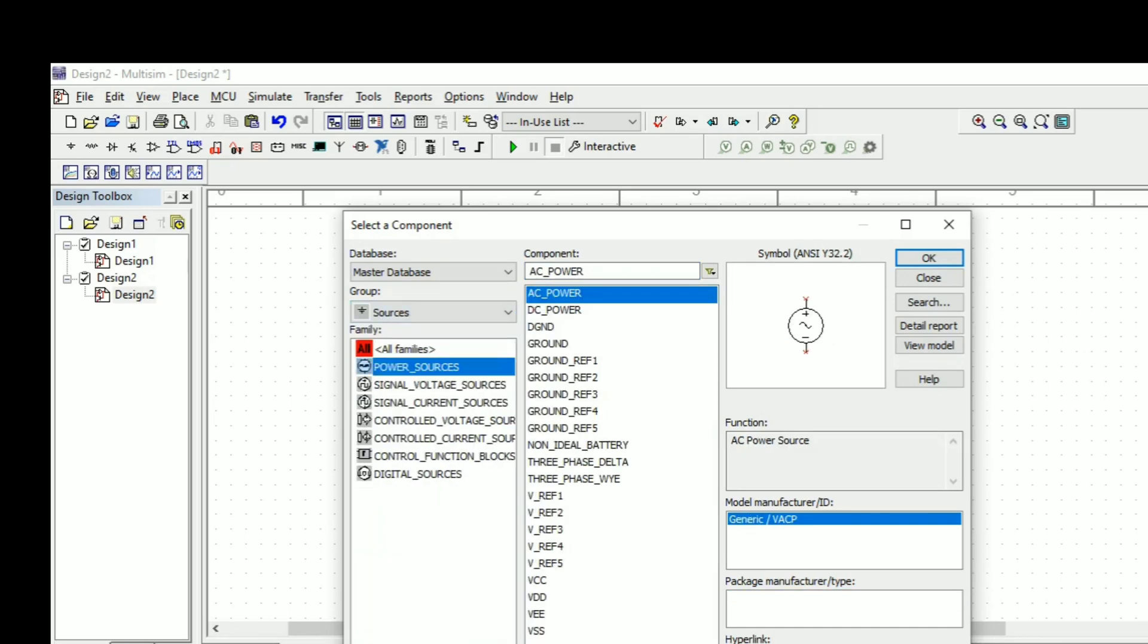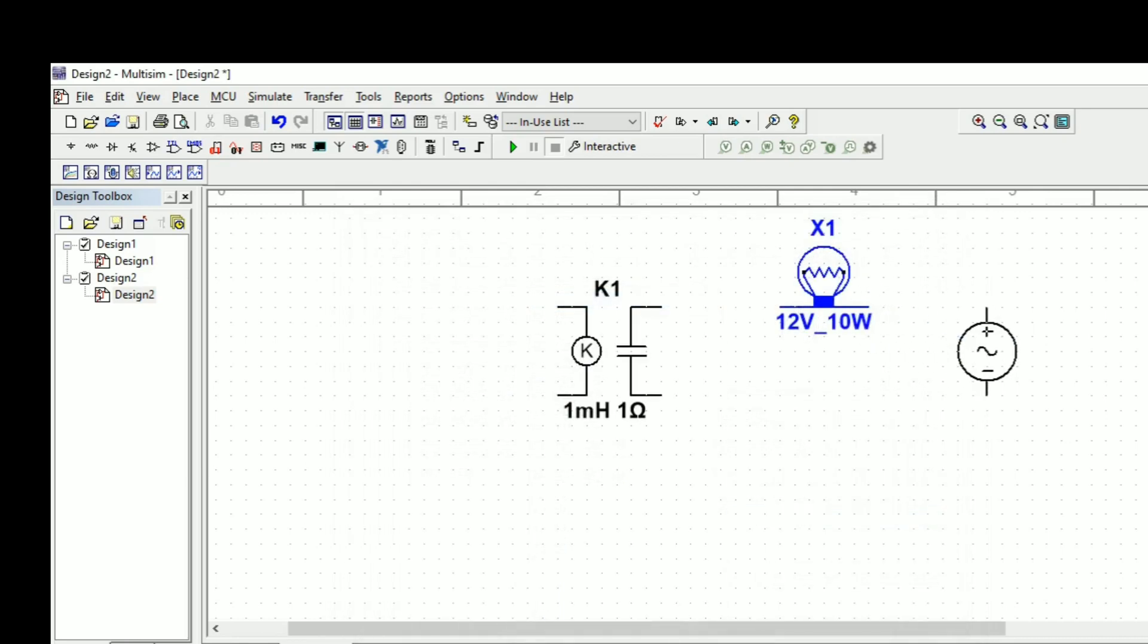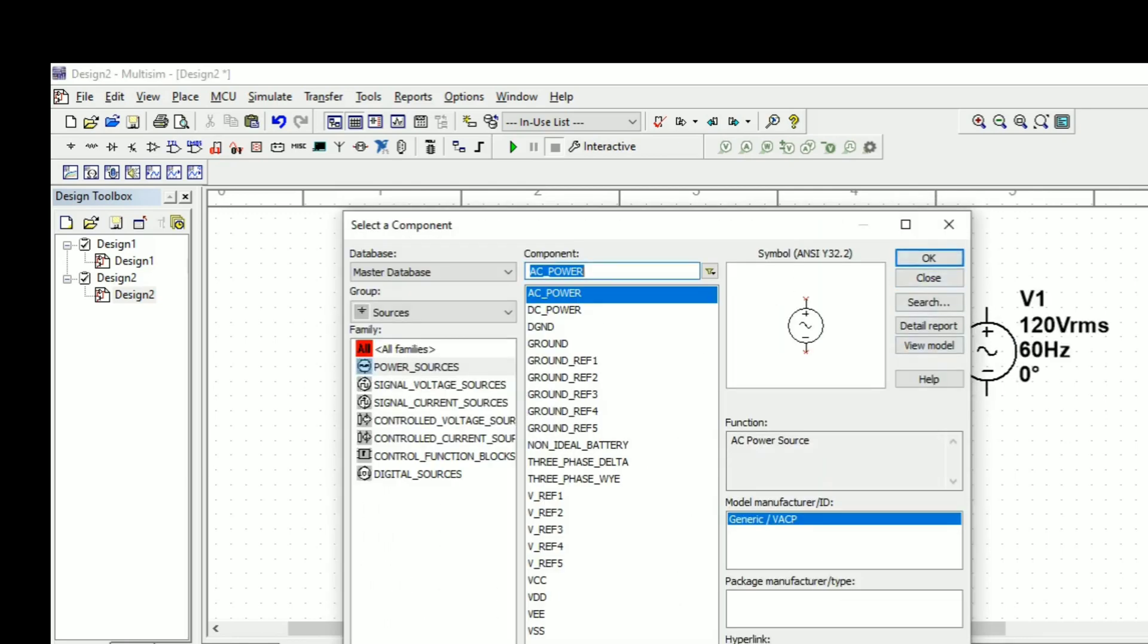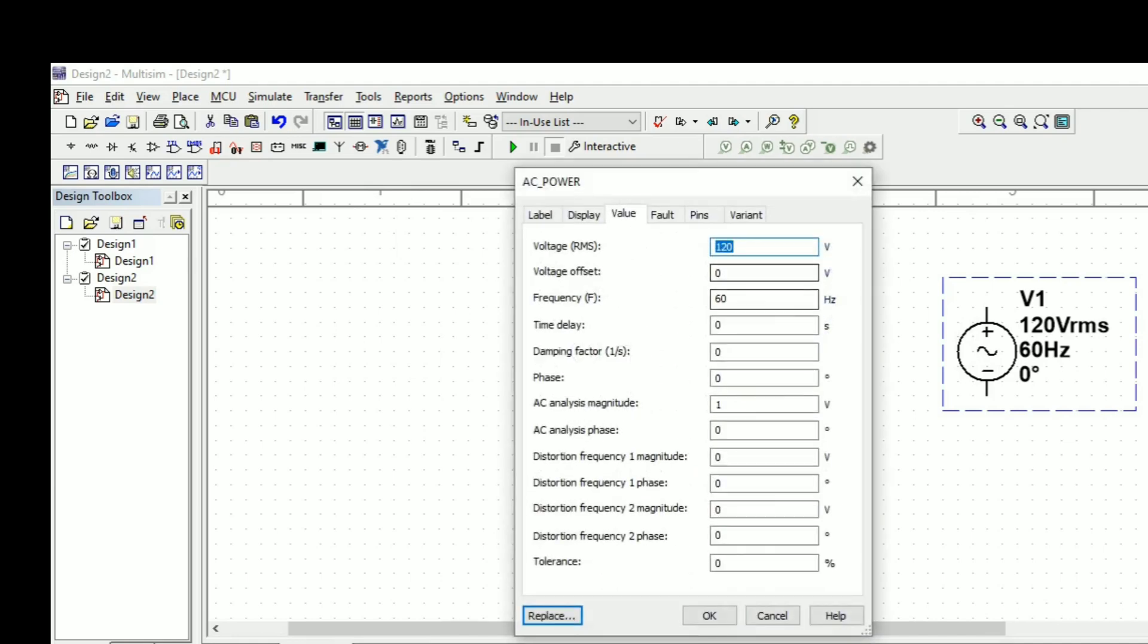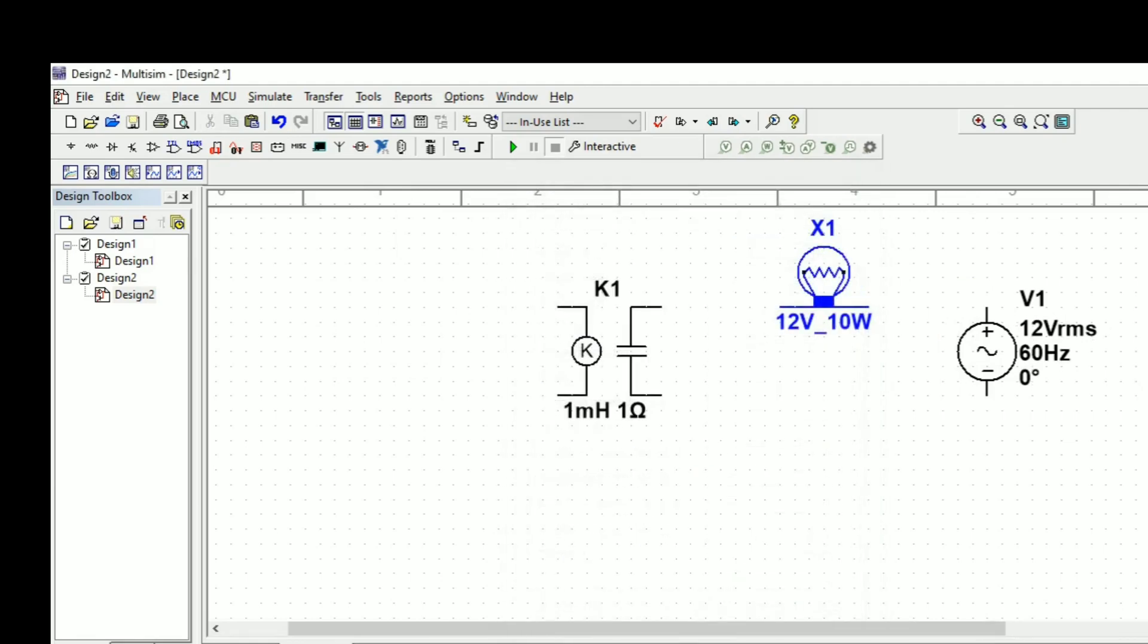We can take this bulb. To operate this pump we need to give the AC supply, that is AC power. So this AC power we are giving. We will change the AC voltage to 12 volt since this bulb is rated as 12 volt.